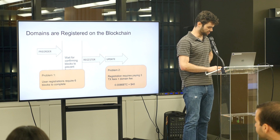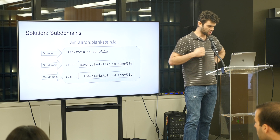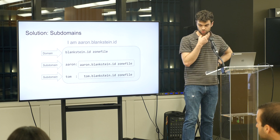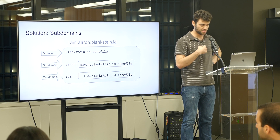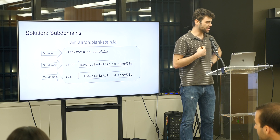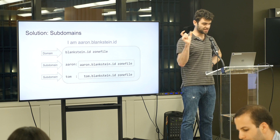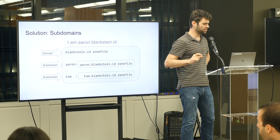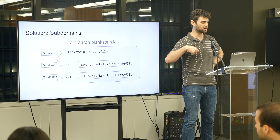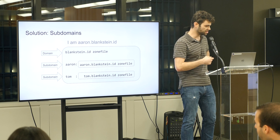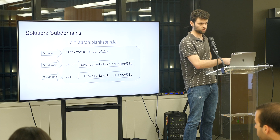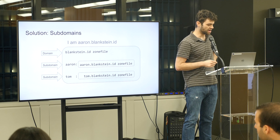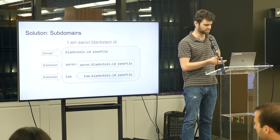So what's the solution? The solution we've come up with is subdomains. In a subdomain world, I would tell you that I am aaron.blankstein.id. You can look up the blankstein.id zone file — that's the domain — and within that zone file it will contain entries pointing to other zone files. This zone file has two subdomains defined, one for aaron and one for Tom, and both of those zone files are just strings like they were before.